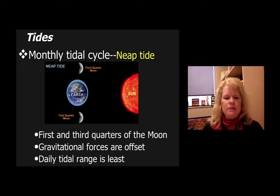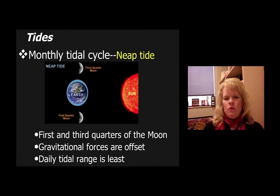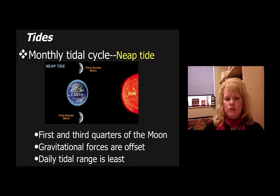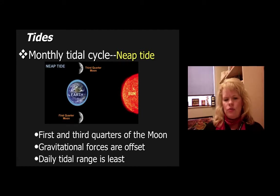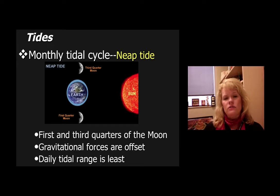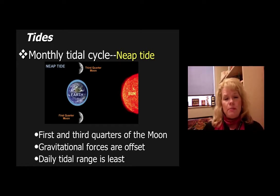For a neap tide, the Moon is not in between us and the Sun — it's at third quarter and first quarter stages. The forces are offset between the Moon, the Earth, and the Sun, and the tidal range is very minute. It's the smallest tide you're going to have. That's called neap — N-E-A-P — a neap tide.